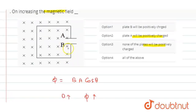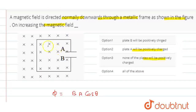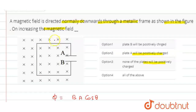So, let's suppose the magnetic field increases. If we assume the direction of induced current is anti-clockwise, then if you curl the right-hand fingers in the current direction, you can determine the direction of the induced magnetic field.